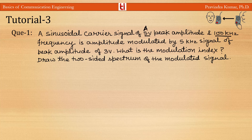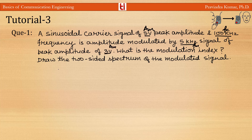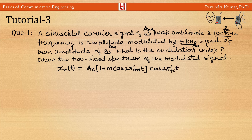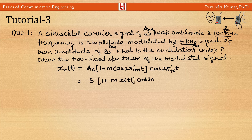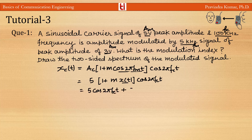This is AM, with fc = 100 kHz. The baseband signal has frequency fm = 5 kHz and amplitude 3 volt. The modulated AM signal is represented as xc(t) = Ac(1 + m·cos(2π·fm·t))·cos(2π·fc·t), where Ac = 5, and x(t) = cos(2π·fm·t). Expanding: 5·cos(2π·fc·t) + 5m·x(t)·cos(2π·fc·t).